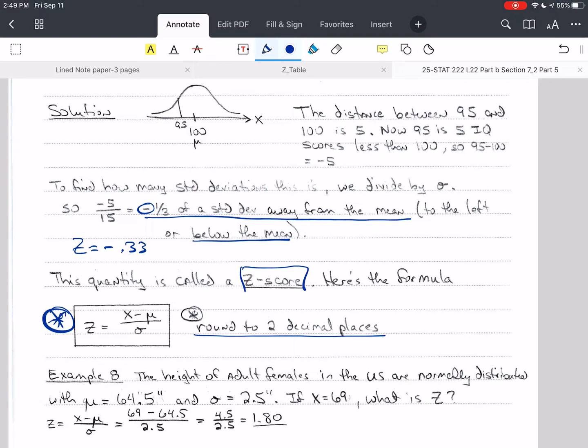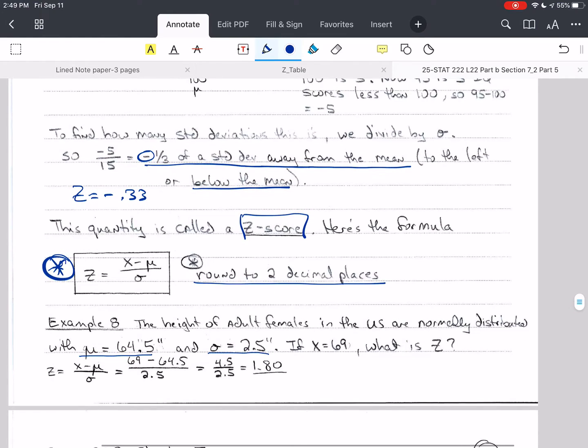So let's look at this example. The height of adult females in the U.S. are normally distributed with a mean of mu = 64.5 inches and sigma = 2.5 inches. If x = 69, what is z? So how do we get our z-score off of a raw score of 69 inches?